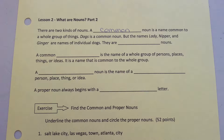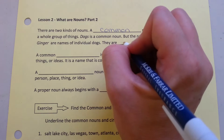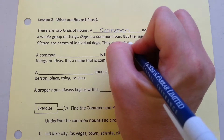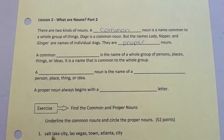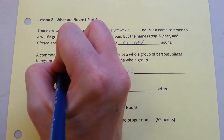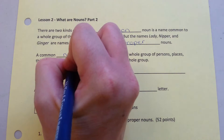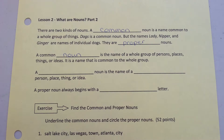Dogs is a common noun, but the names Lady, Nipper, and Ginger are names of individual dogs. They are proper nouns. A common noun is the name of a whole group of person, places, things, or ideas. It is a name that is common to the whole group.